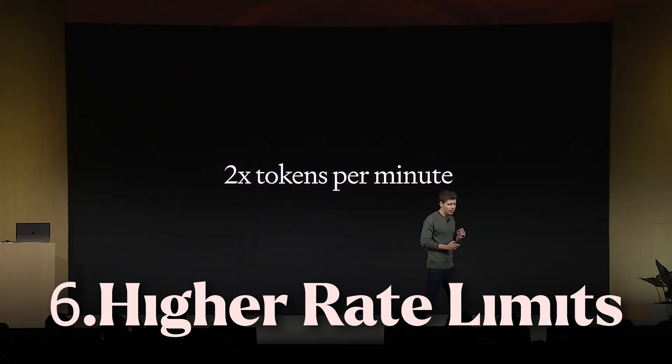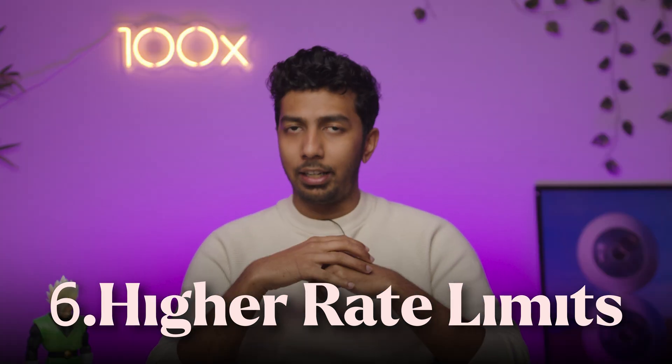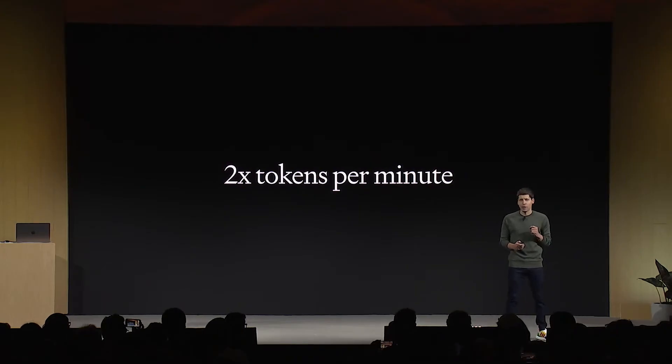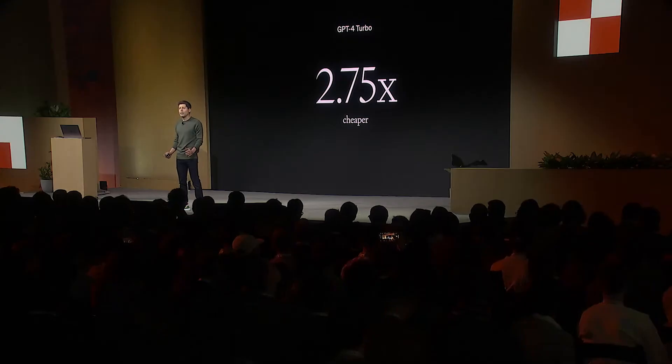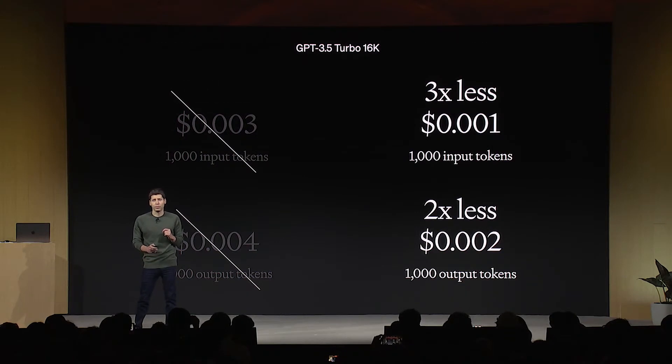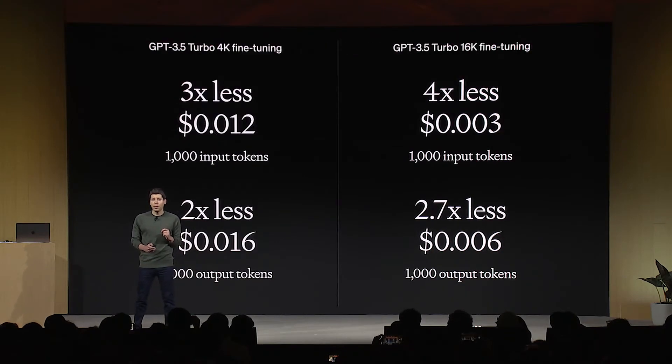Number six is higher rate limits. ChatGPT has essentially doubled their tokens per minute, and they've also reduced the price point by 2.75 times for anyone looking to use their APIs and develop their own apps or systems. That is something pretty exciting for developers. Remember, this is a dev conference — a lot of what Sam has been talking about is for the developer community, and a lot of these updates are intended for developers more than the general public.